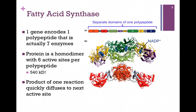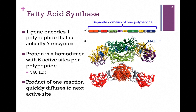It's huge. The benefit of having all of these enzyme activities in a single polypeptide chain is that the product of one reaction can quickly diffuse to the next active site, so the process overall can be very rapid. Here we have the ribbon diagram of this rather impressive enzyme, color-coded according to the domains, which are illustrated at the top of the screen. Keep in mind, these are all just separate domains on a single polypeptide chain.